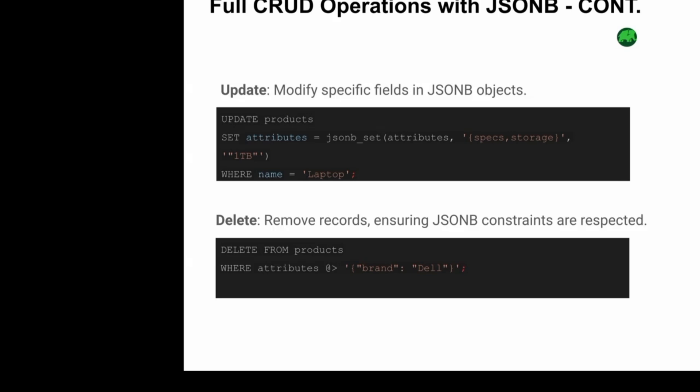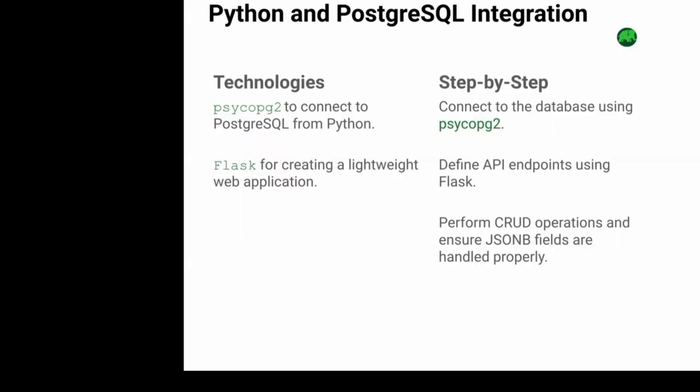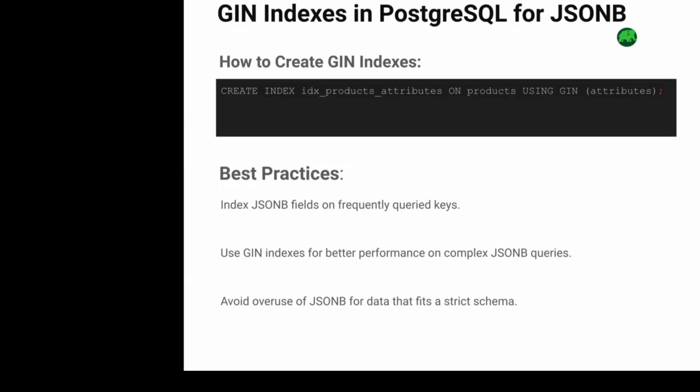You can also modify specific fields in a JSONB object. We can remove records, ensuring JSONB constraints are respected. You can easily integrate with JSONB using libraries like psycopg2. With psycopg2 and Flask, you can perform full CRUD operations on JSONB data from your Python applications, making it easy to build flexible APIs.